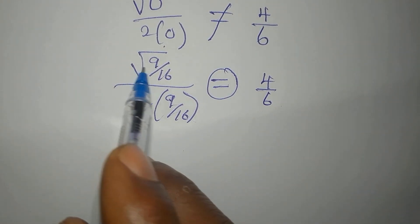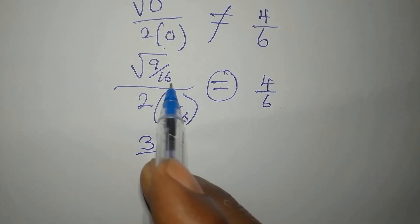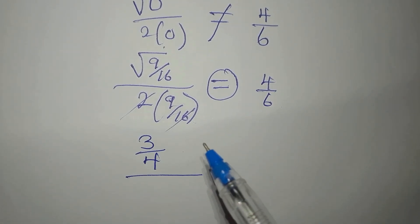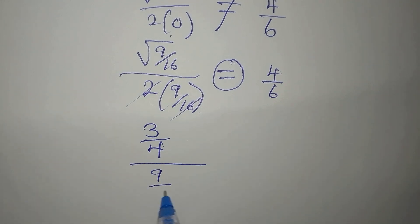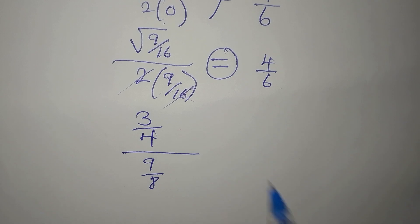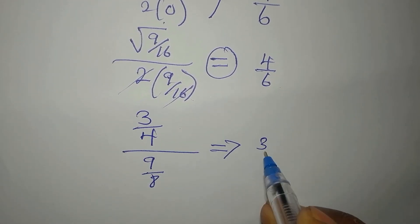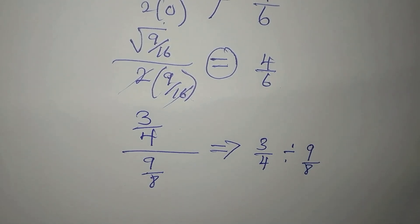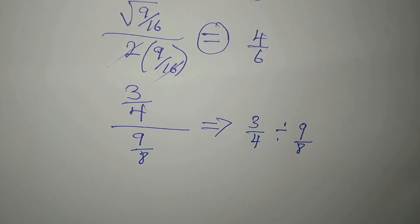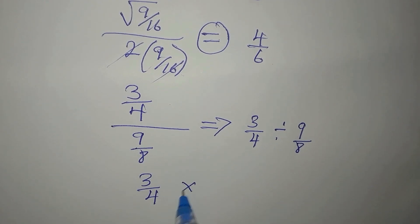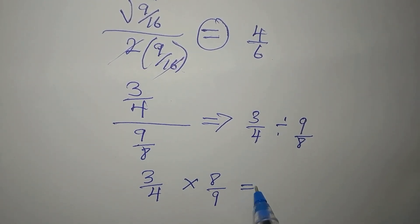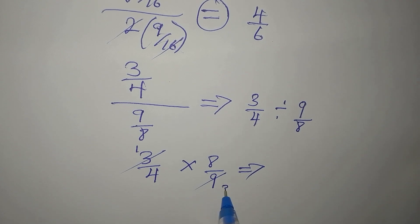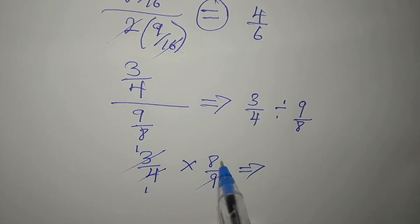The square root of 9 is 3 and the square root of 16 is 4, giving 3 over 4 in the numerator. In the denominator, 2 times 9 over 16 gives 9 over 8. So we have 3 over 4 divided by 9 over 8, which we rewrite as 3 over 4 times 8 over 9.